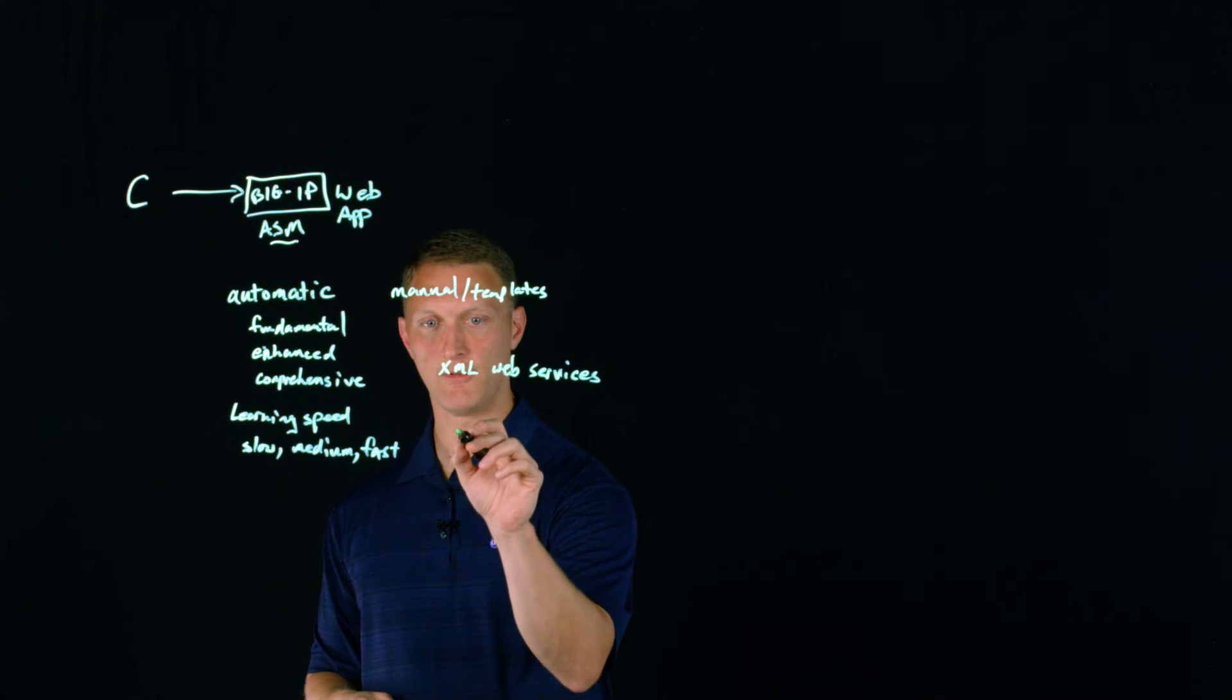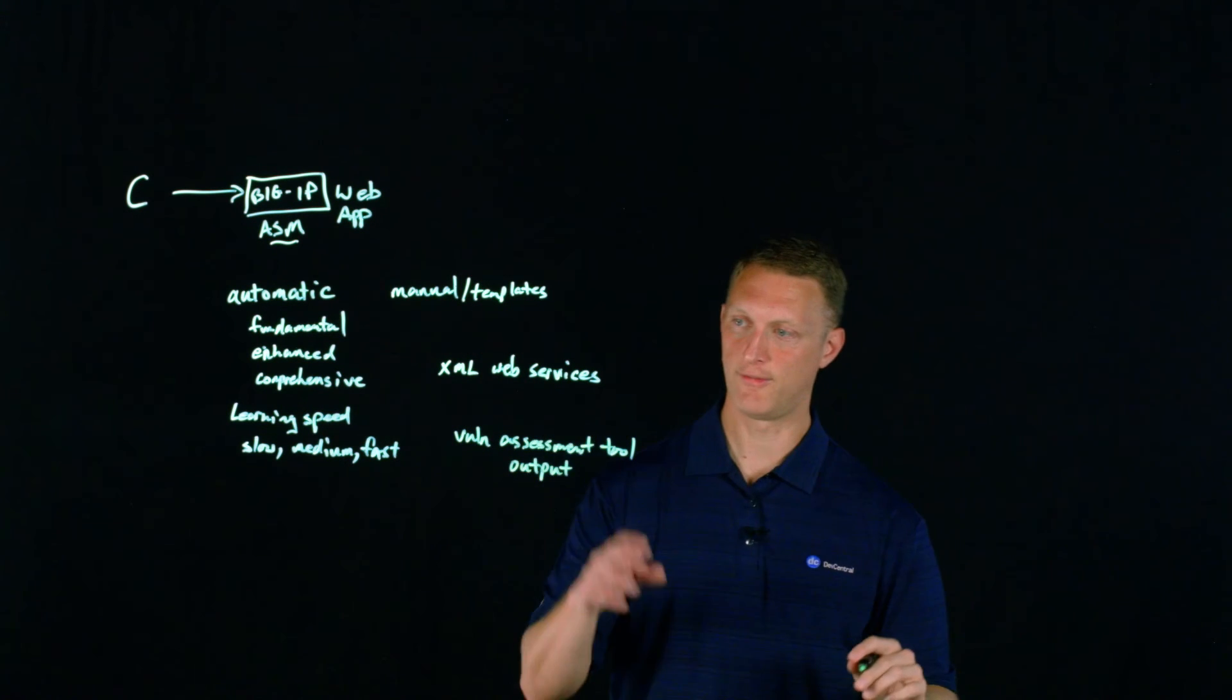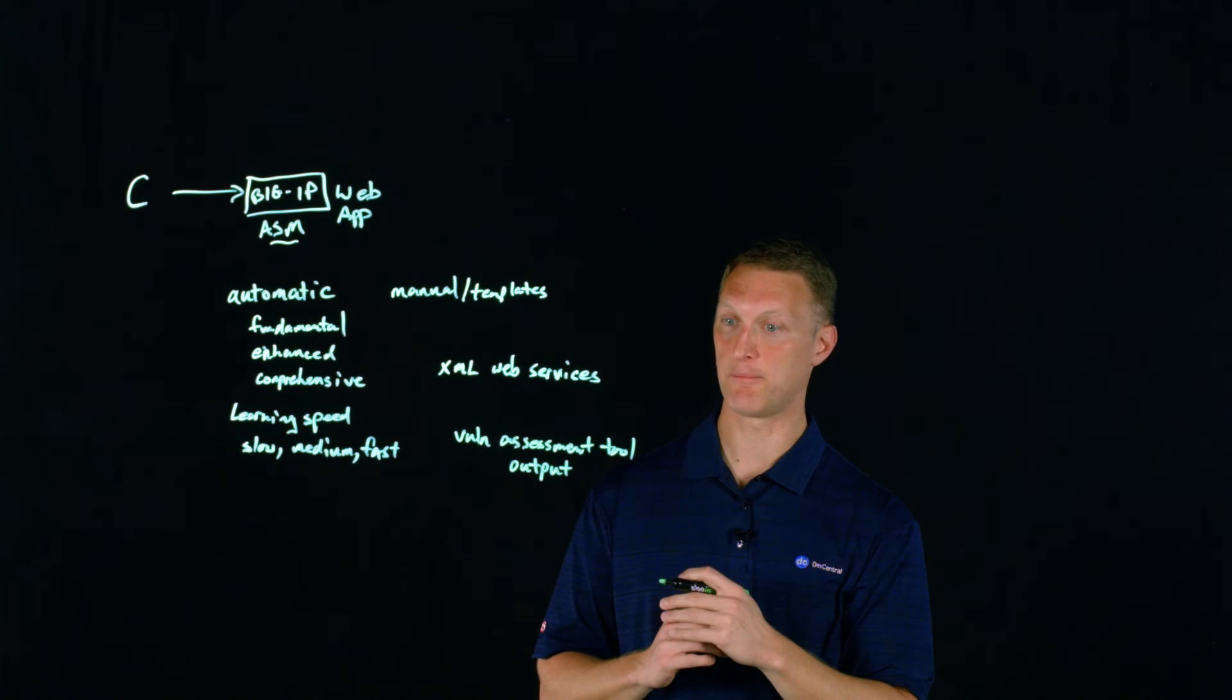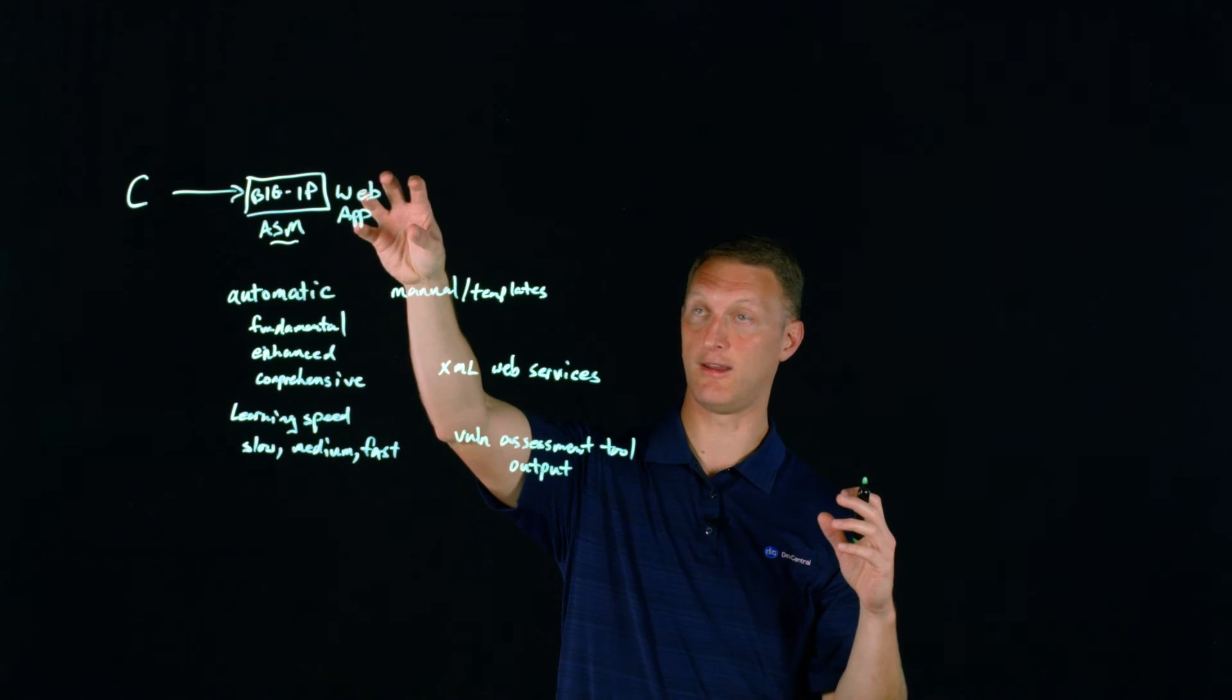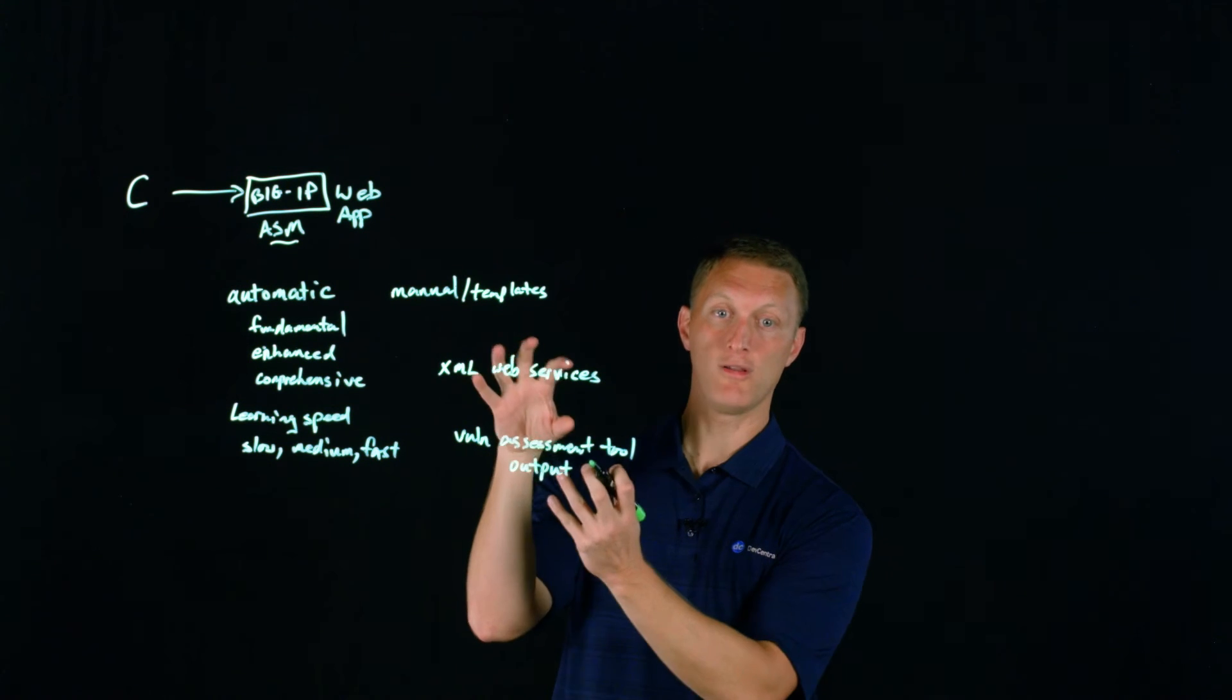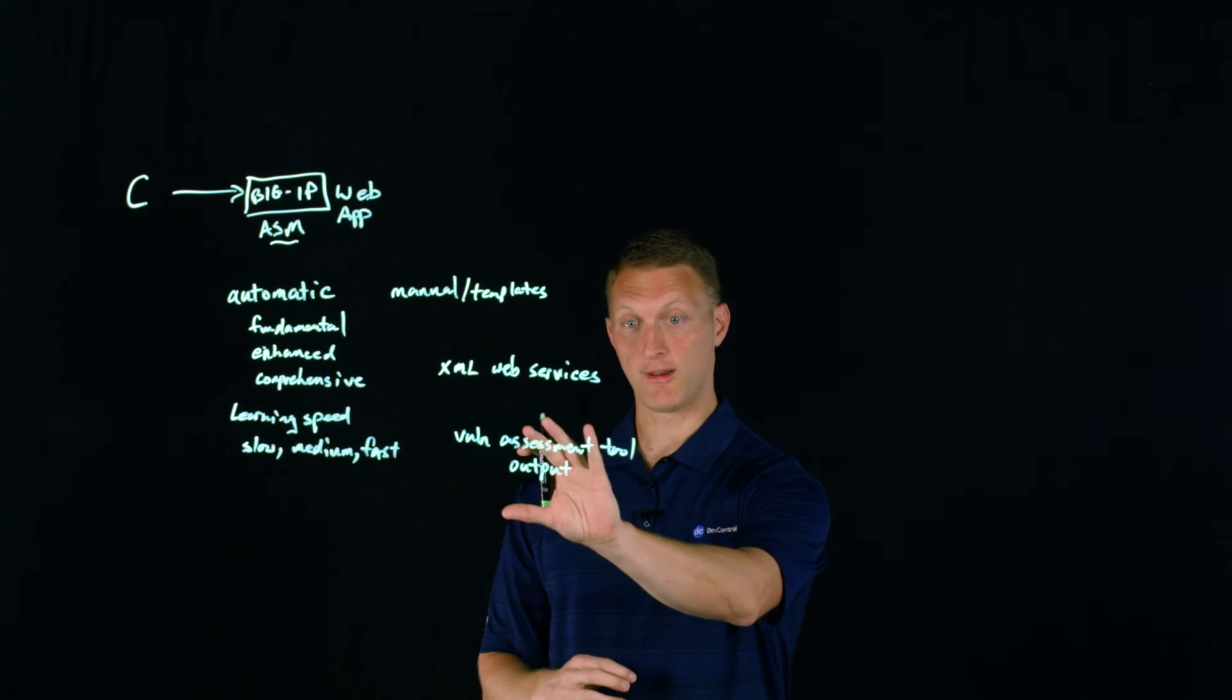The last one is a vulnerability assessment tool output. And this one is kind of cool. There are a lot of different vulnerability assessment tools, maybe like White Hat Sentinel, IBM has some, there's a whole list of them that are compatible with the big IP. And the idea with this one is that you can take a vulnerability assessment tool that's been run against your web application here. And then the vulnerability assessment tool is going to tell you, Hey, these are all the problems with your web application. These are all the security vulnerabilities. So based on that, you can import all of those vulnerabilities back into the ASM and it will create a policy automatically that will specifically block against those vulnerabilities. So you can run that thing. So that's kind of a cool one as well.